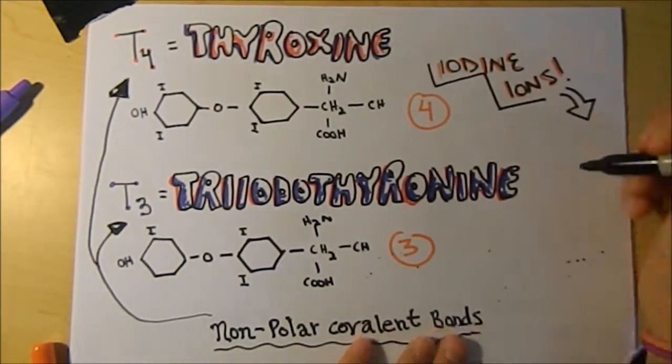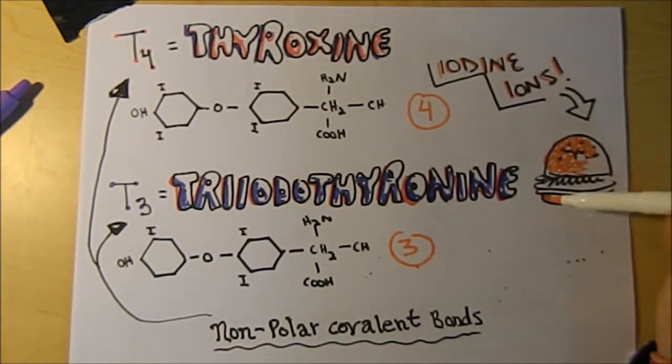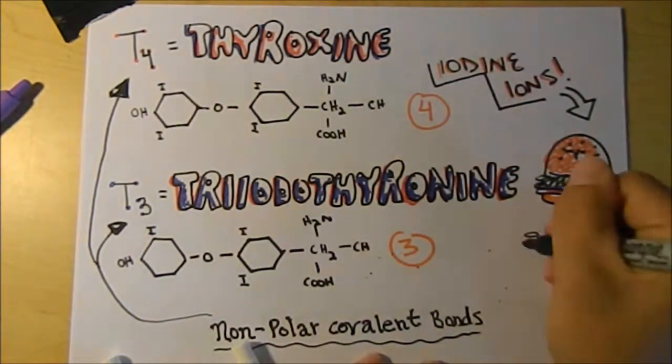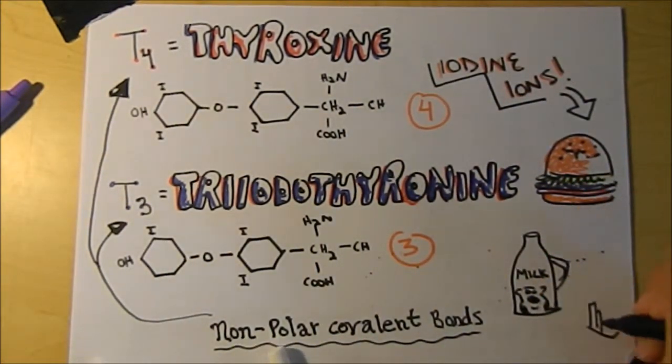Iodine ions are important because they are essential in the making of thyroid hormone. Our body obtains these ions from the foods we eat in our diet.